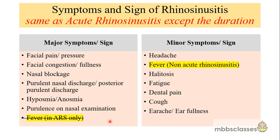Signs and symptoms of chronic rhinosinusitis are very similar to acute rhinosinusitis except for the duration, which is 12 weeks or more. Major symptoms include facial pain or pressure, facial congestion or fullness, nasal blockage, purulent nasal discharge (anterior or posterior), hyposmia or anosmia, and purulence on nasal examination. Importantly, unlike acute rhinosinusitis, fever is not included in the major signs and symptoms of chronic rhinosinusitis.